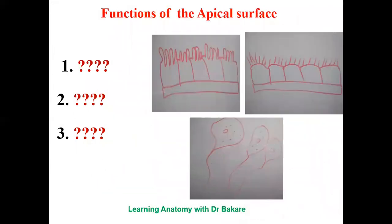The functions of the apical surface can be attributed to the transformations seen on it. The apical surface performs the function of absorption when it is thrown into infoldings, and it performs the function of transportation when the presentation of cilia is seen.